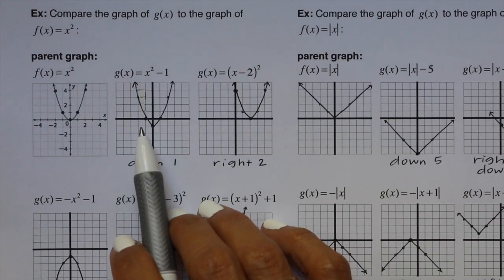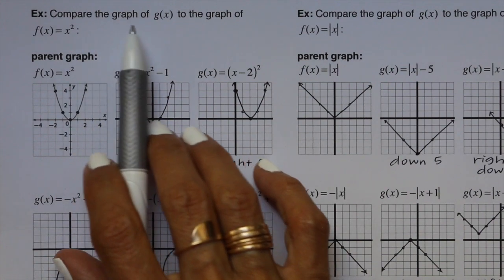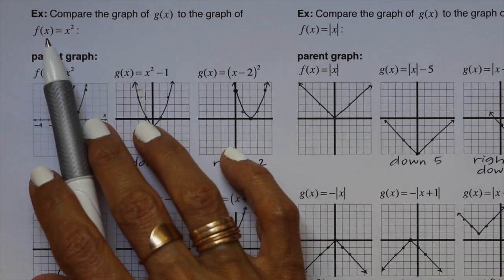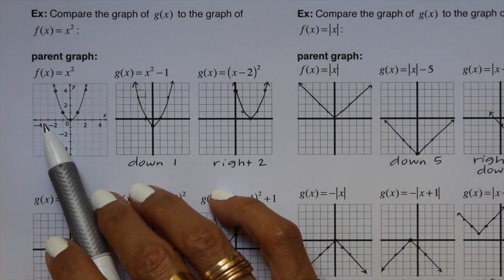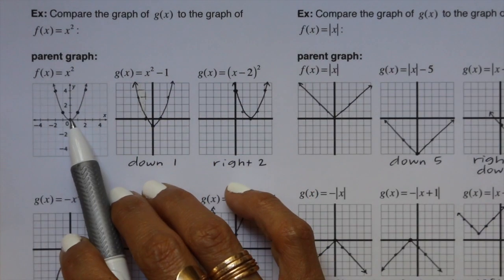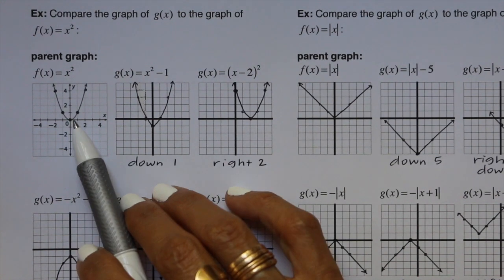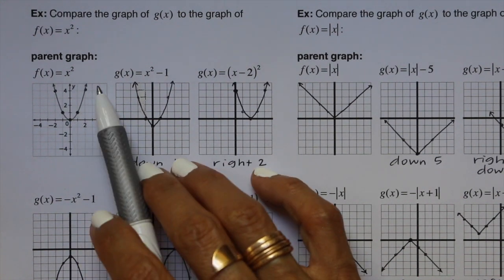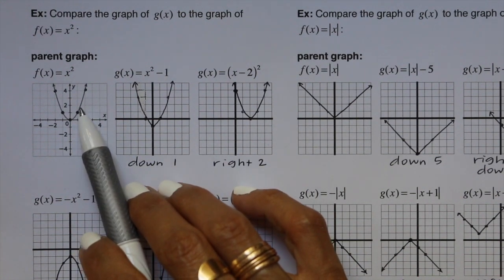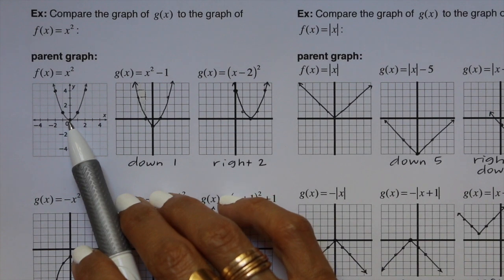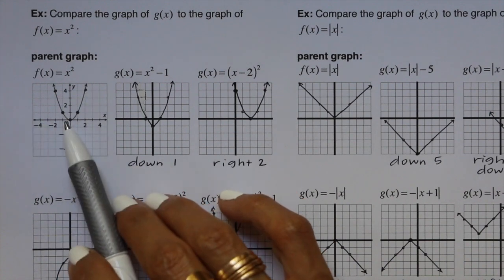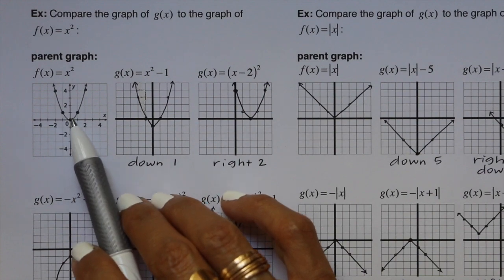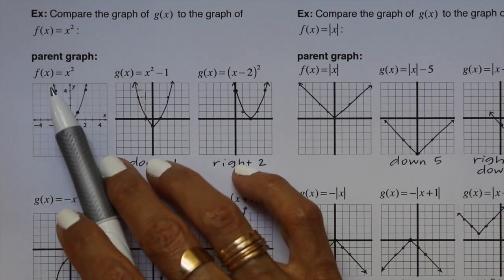In this lesson, we're going to talk about transformations of graphs. This first example says compare the graph of g of x to the graph of f of x, which equals x squared. The vertex of the parent graph is at (0, 0). The other points are over 1 up 1, and the next point is over 2 up 4. Similarly, in the left direction, left 1 up 1, then left 2 up 4.